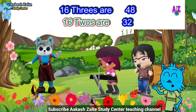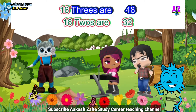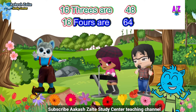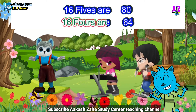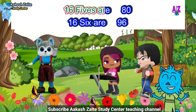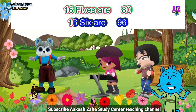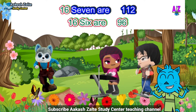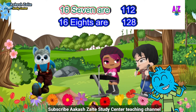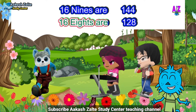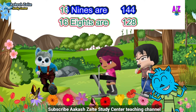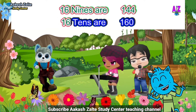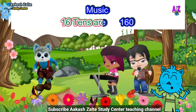Sixteen twos are thirty-two, sixteen threes are forty-eight, sixteen fours are sixty-four, sixteen fives are eighty, sixteen sixes are ninety-six, sixteen sevens are one twelve, sixteen eights are one twenty-eight, sixteen nines are one forty-four, sixteen tens are one sixty.